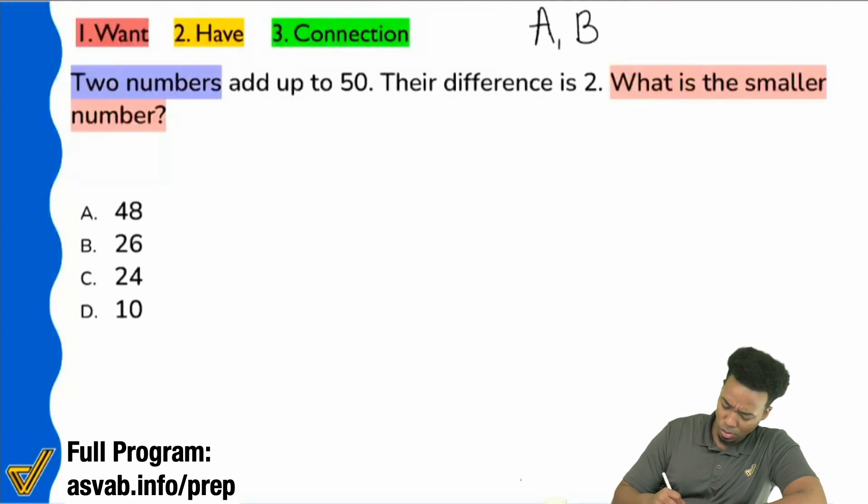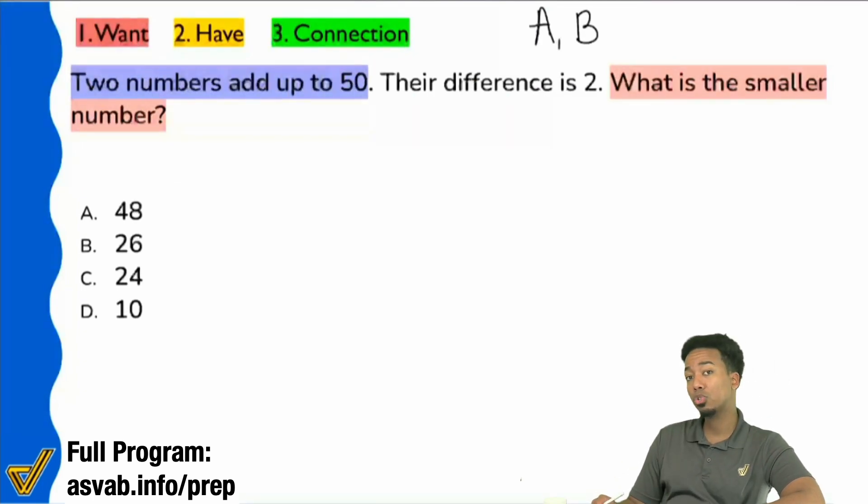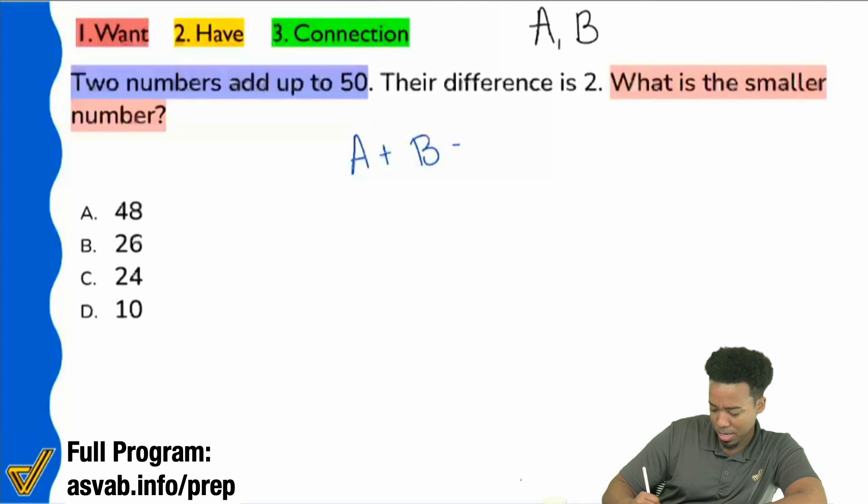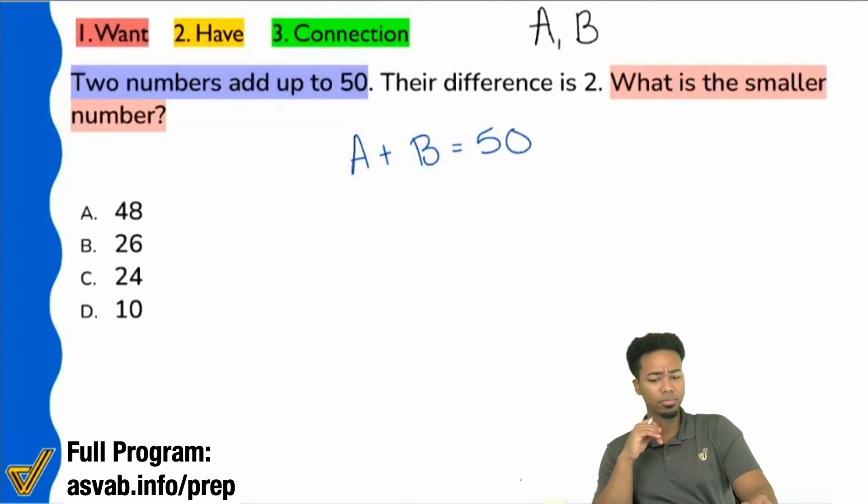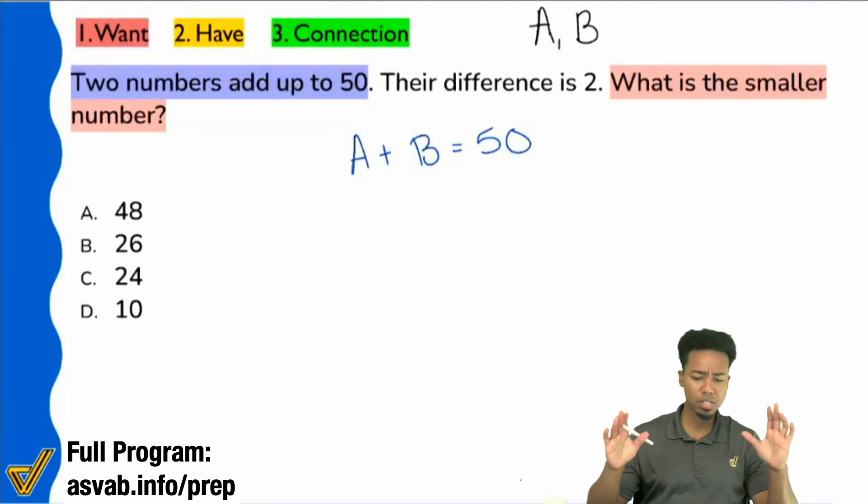And I'm just going to go ahead and use these openly. Let's see what's going on. So we have here, it says two numbers add up to 50. Okay. So if I'm saying two numbers add up to 50, is it okay if I say A plus B equals 50? Is that safe? Okay. Cool. We've got some traction going.